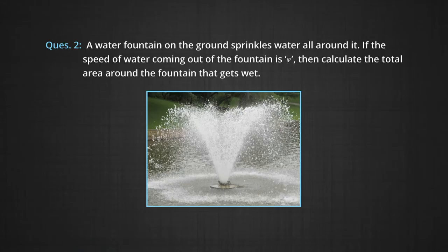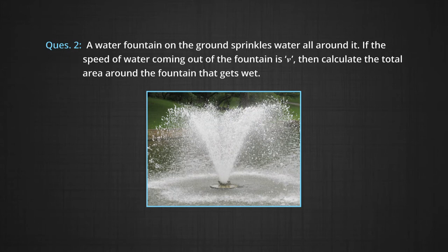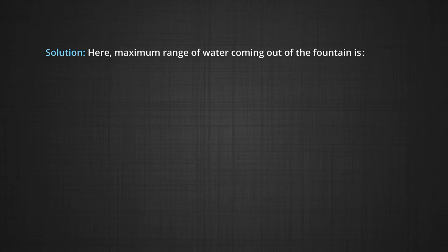Question 2: A water fountain on the ground sprinkles water all around it. If the speed of water coming out of the fountain is V, calculate the total area around the fountain that gets wet. Imagining the picture of the fountain, the water falls in a circular area. The maximum range of water coming out of the fountain is R_max = V²/g. Let this be equation 1.